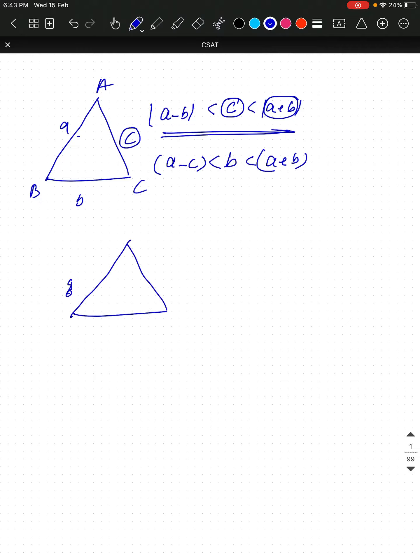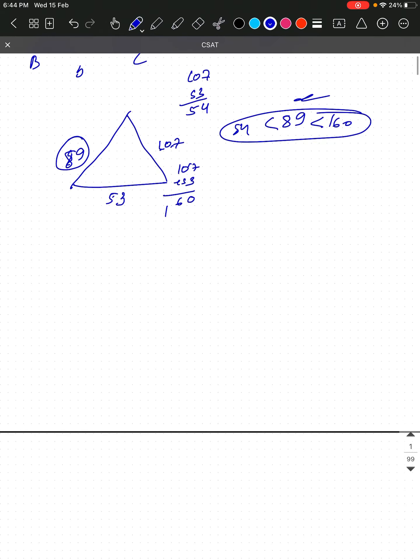For example, consider a triangle with sides 89, 107, and 53. Let's check if 89 satisfies the conditions. The difference 107 minus 53 is 54, and 89 is greater than 54. The sum 107 plus 53 is 160, and 89 is less than 160. So this condition is satisfied - yes, this can be a triangle.